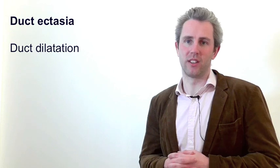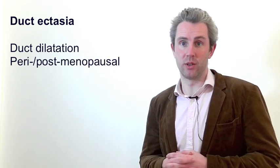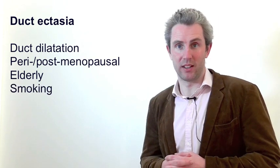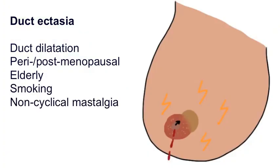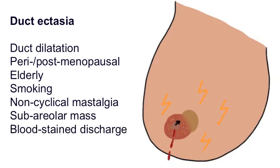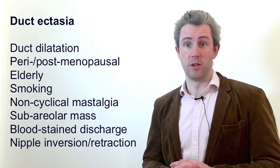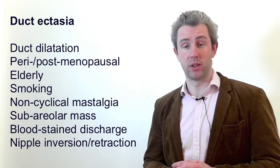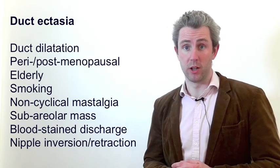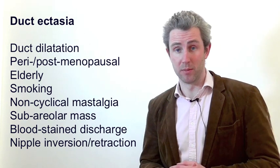Duct ectasia is dilatation of the ducts; the cause is still debatable, although it may follow chronic duct occlusion. It tends to occur in peri- or post-menopausal women, including those who are elderly, and smoking is a risk factor. Typically there is non-cyclical mastalgia — a painful breast — and a palpable sub-areolar mass, often with blood-stained discharge and nipple inversion or retraction. This can be difficult to distinguish clinically from a carcinoma, so triple assessment is very important.